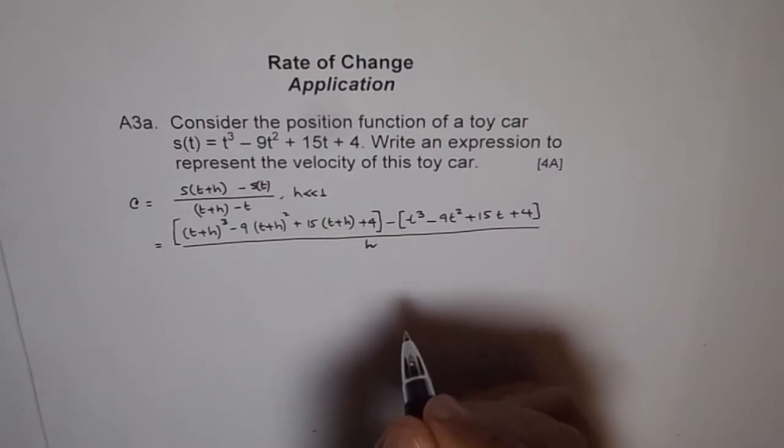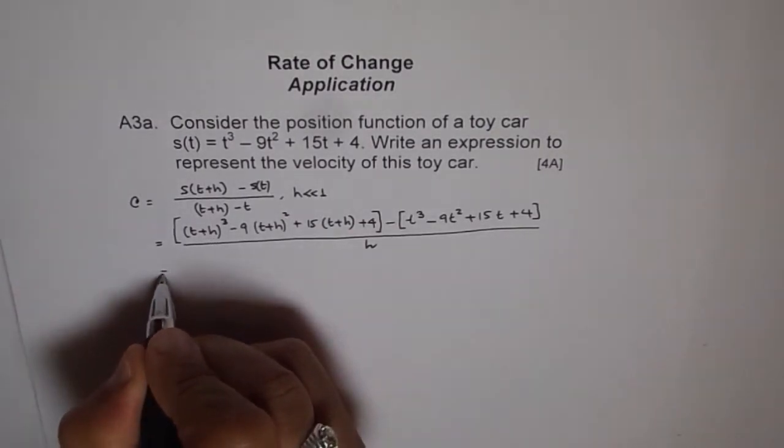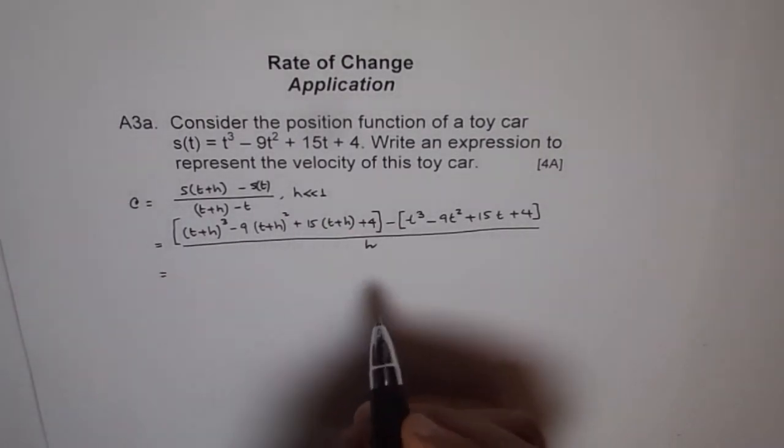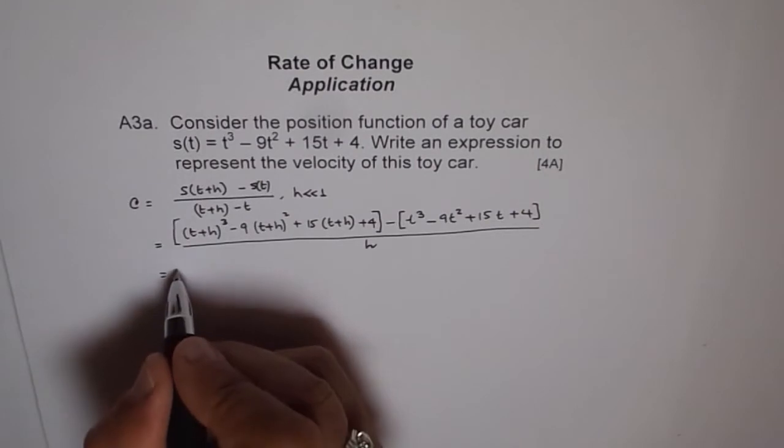h is not 0, remember that. h is not 0, but it is very, very close to 0. Now, we will expand this. Let me write this h as like 1 over h.